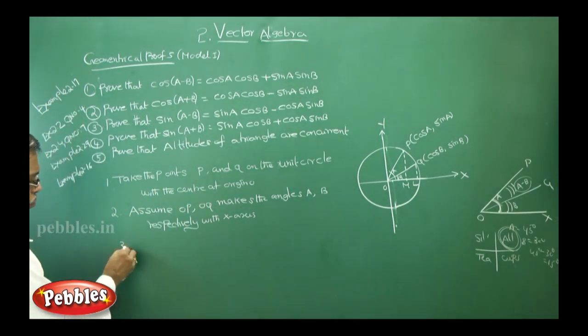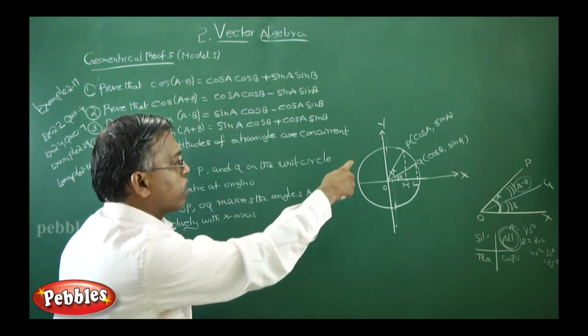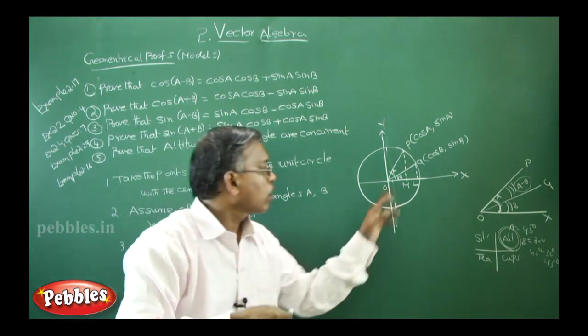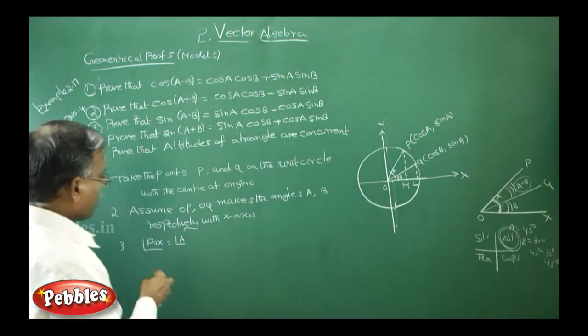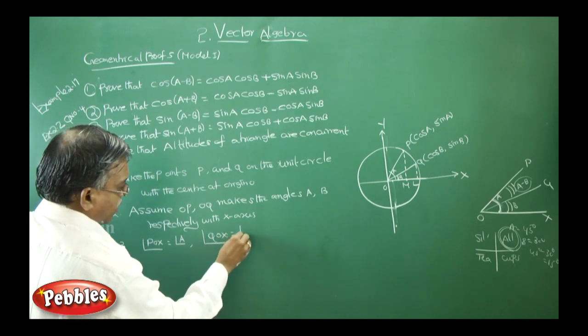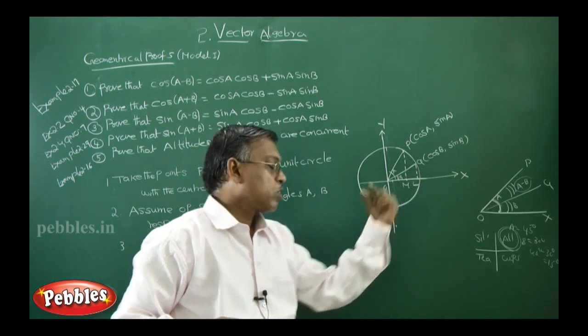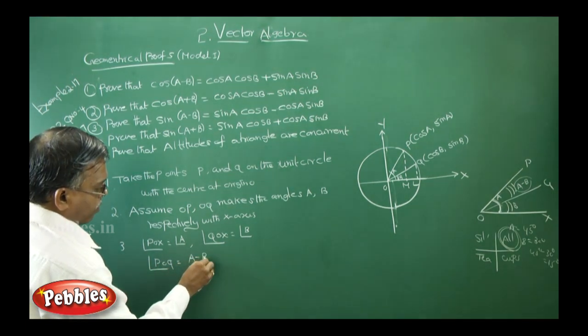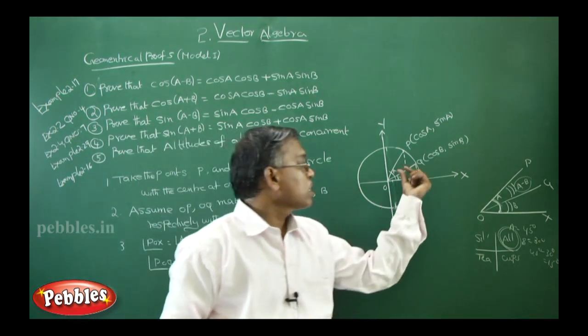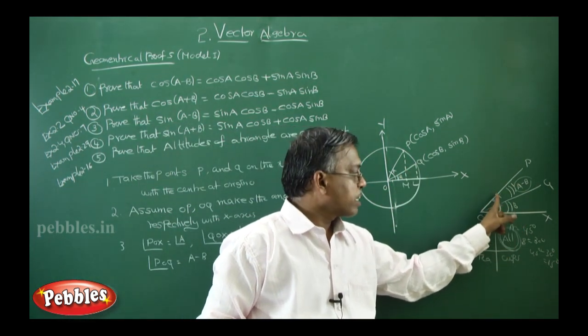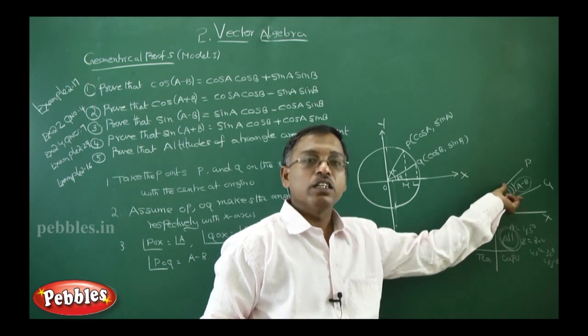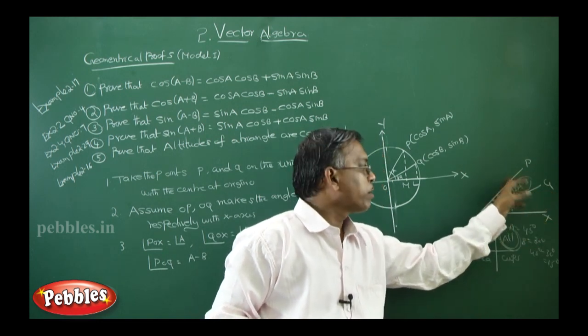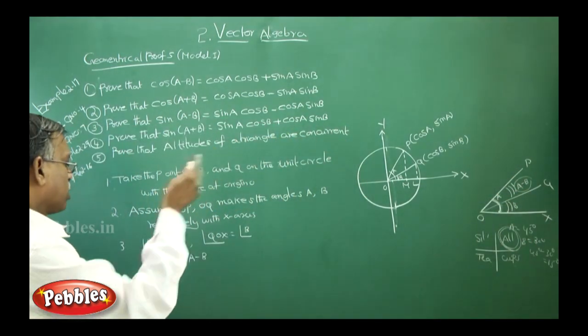Now third point. You should tell about the angles. What is angle POX? Angle POX is equal to angle A, this full angle. Next, what is angle QOX? Angle B. This angle. So now what is angle POQ? A minus B. Why A minus B? Because I already explained the same point here. If this one is angle A, if this one is B, what is the middle angle? A minus B. So angle POX minus angle QOX, then you will get the middle angle A minus B, angle POQ. That is your third point.